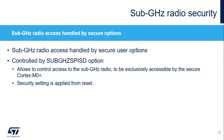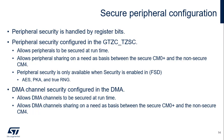Sub-gigahertz radio access can be secured by the sub-gigahertz radio SPI security disable user option, allowing exclusive Cortex-M0 Plus access. When enabled, sub-gigahertz radio access is secured from reset. The AES Accelerator 1, public key accelerator, and true random number generator peripherals can dynamically be secured at runtime by Cortex-M0 Plus firmware. DMA channels can also be dynamically secured at runtime. The security information can be read by the non-secure Cortex-M4 to get information on the peripheral security status.